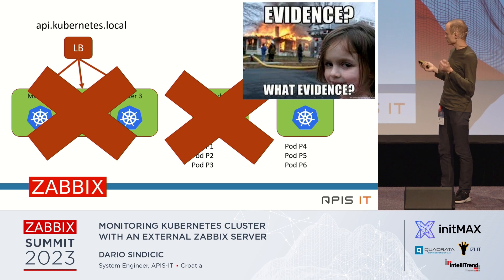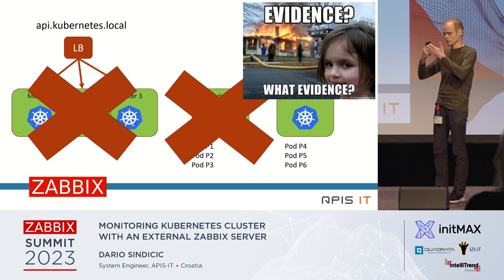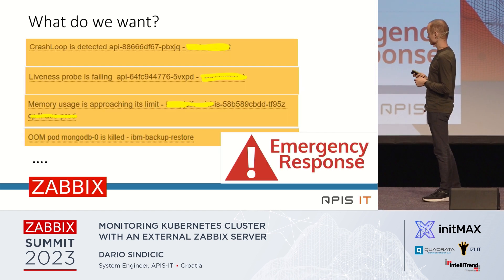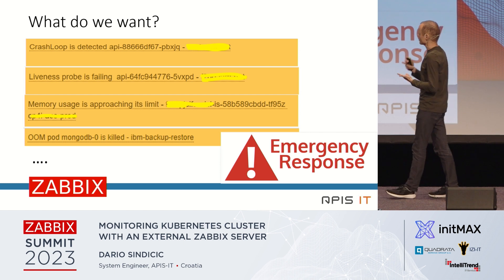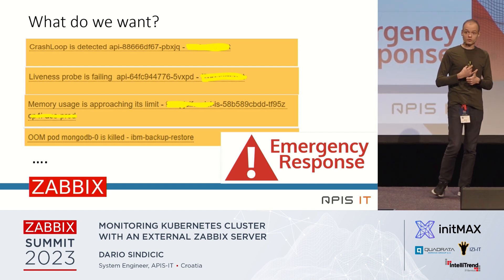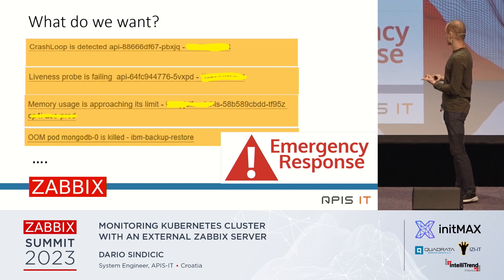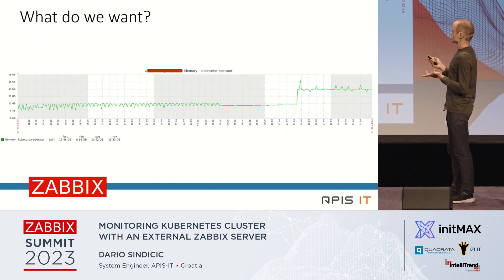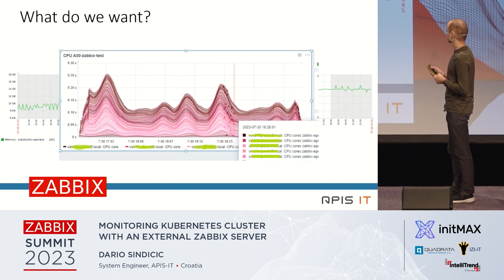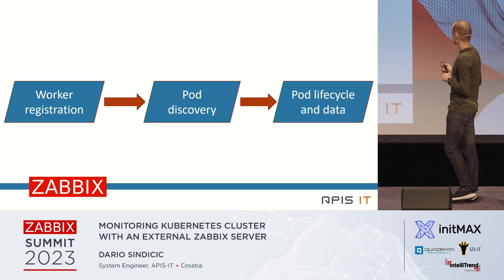In the case of an emergency, monitoring is actually the last resource for finding proof of what happened. We want to receive events such as crash loops, liveness problems, memory usage approaching its limit, or an out-of-memory kill. We want to see beautiful graphs inside Zabbix. To do that, we need to first register our worker, discover all pods, and then collect all data regarding the pods.